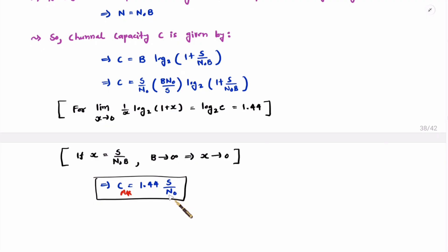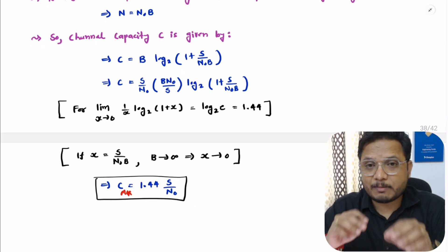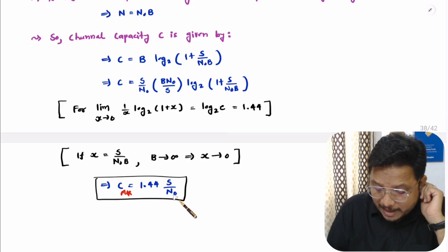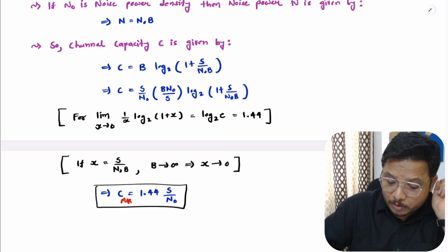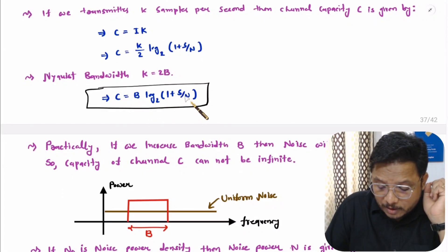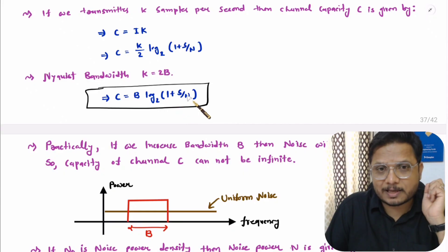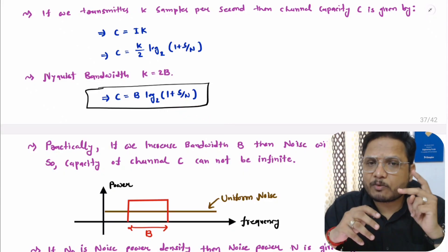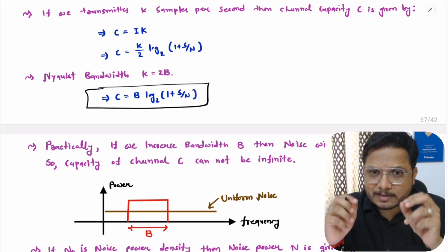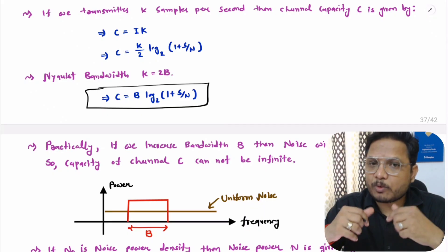Therefore, the maximum channel capacity equals 1.44·S/N₀, where N₀ is the noise power density. This is how one can understand the maximum capacity of a channel. To summarize: channel capacity based on signal-to-noise ratio is C = B·log₂(1 + S/N), and maximum channel capacity is C_max = 1.44·S/N₀. Both equations are very essential and will be used in upcoming example videos.